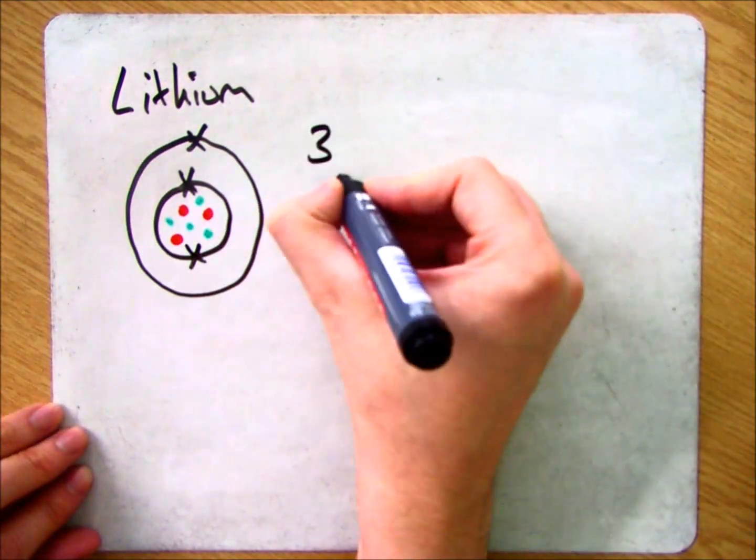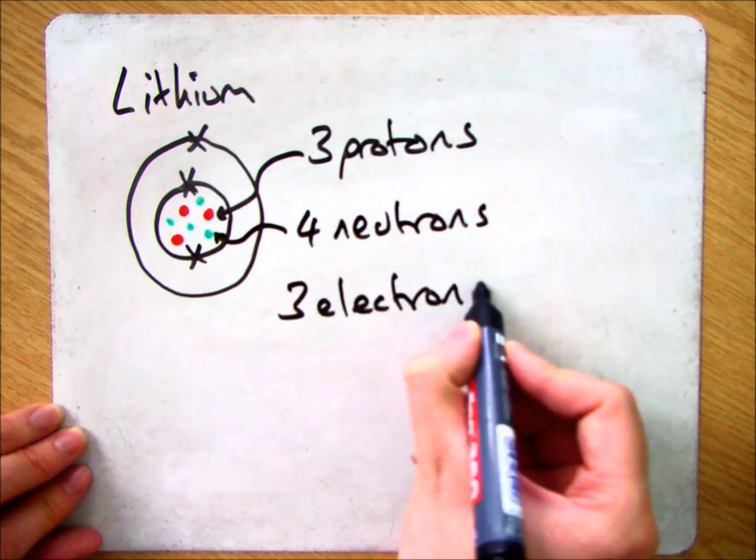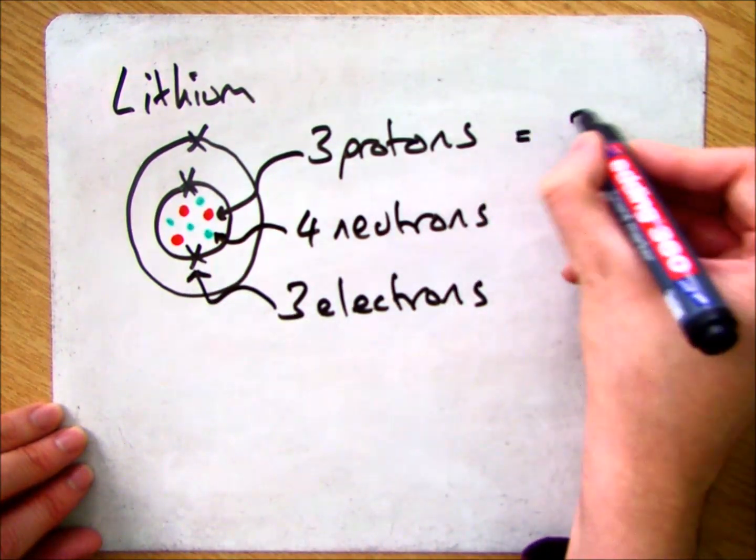which has three protons, four neutrons, and three electrons, you can work out the charges of each of the subatomic particles.